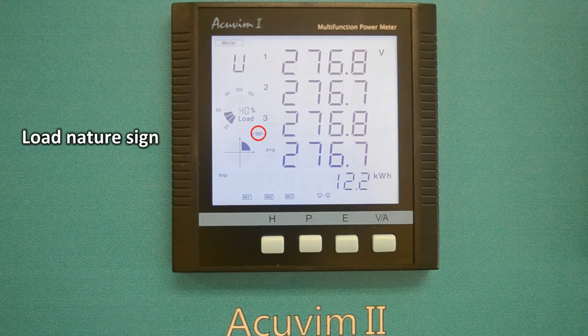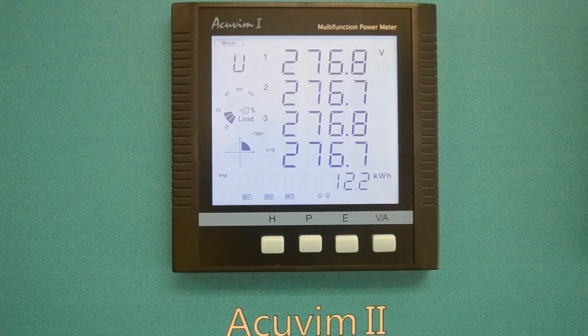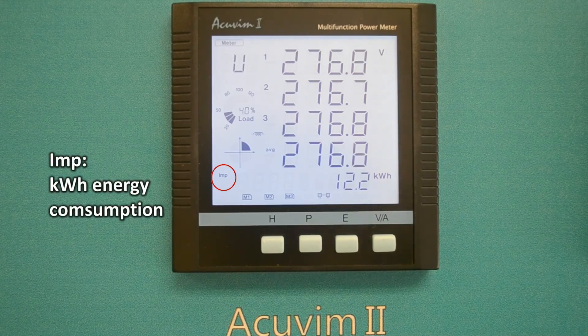The load nature icon indicates if the load is inductive. The IMP icon shows the kilowatt hour energy consumption.